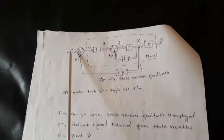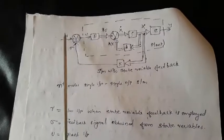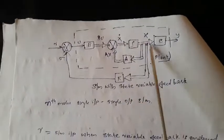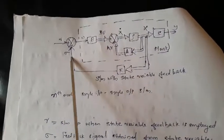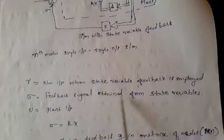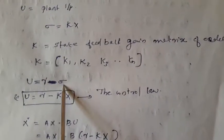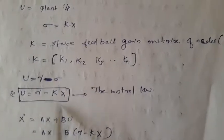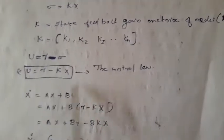Now the input is changed to R. The input U is equal to R minus sigma, where sigma is equal to Kx — x is fed back and multiplied by K to obtain sigma. R is the system input; when state variable feedback is employed, sigma is the feedback signal obtained from the state variable, and U is the plant input. Therefore, U = R - Kx. This is the control law.